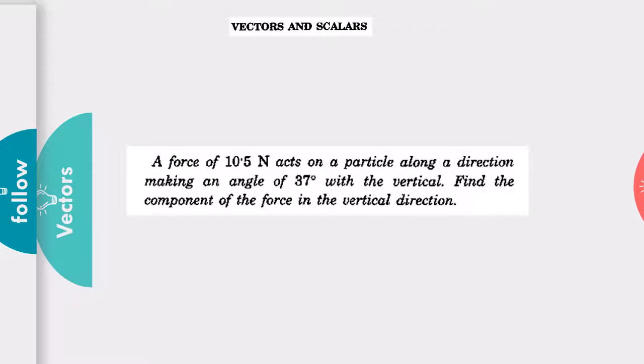Now I have given you one simple question. A force of 10.5 Newton acts on a particle along a direction making an angle of 37 degrees with the vertical. Find the component of the force in the vertical direction.